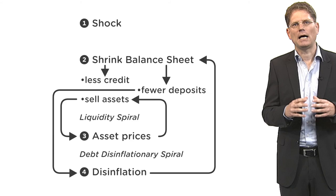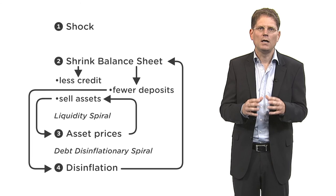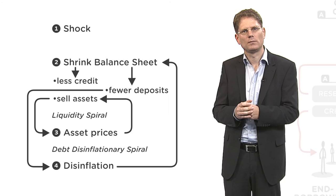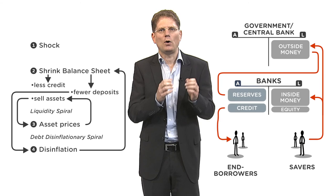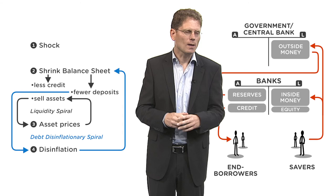In sum, a small shock has large, persistent effects on the real economy and hurts especially the levered sector, including banks. We have analyzed the impact of an adverse shock on financial stability and price stability, and we have gained a better understanding of their interaction. We have seen that the banks are hit on both sides of the balance sheet — on the asset side and on the liability side — giving rise to two spirals: the liquidity spiral and the disinflationary spiral.